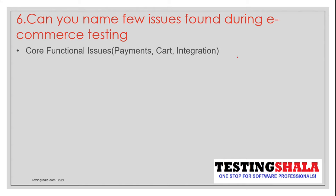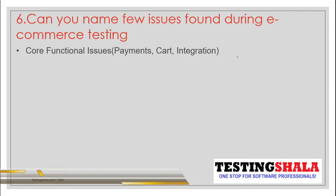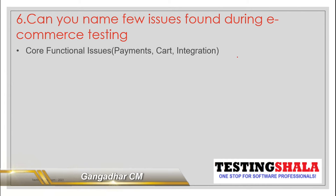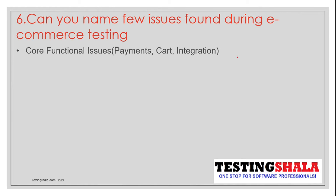The first category is core functional issues. Core functional issues could include issues related to payments, card functionality, integration, user registration, product management, or user data. These are some of the issues that fall under core functional issues.